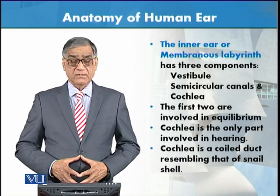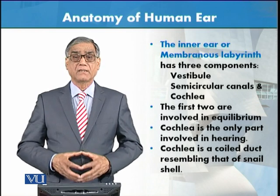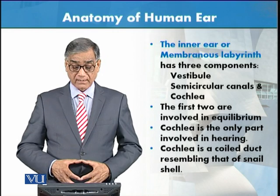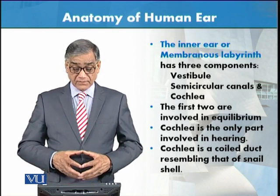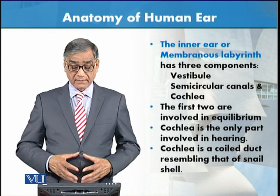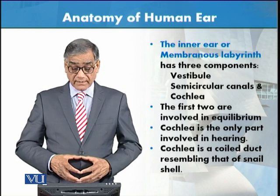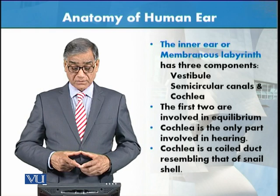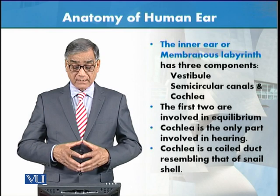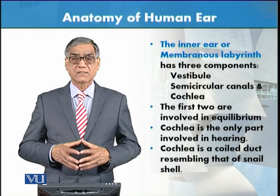The inner ear is also called the membranous labyrinth and has three components: the vestibule, the semicircular canals, and the cochlea. The vestibule and semicircular canals are involved in equilibrium, while the cochlea is the only part mainly concerned with hearing. The cochlea is a coiled duct resembling a snail shell.